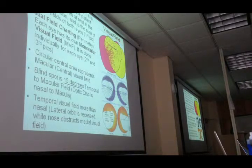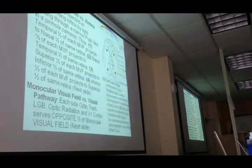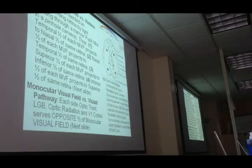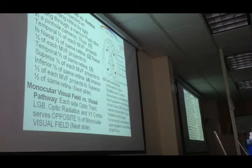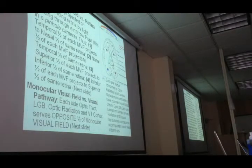Now let's see how the visual field is represented in each retina and continues through the optic tract, optic radiation, and so on. This is the right eye and this is the left eye — look at the color coding: orange and blue. Light rays from the left are crossing at the pupil and falling on the right half of each retina. Light rays from the blue portion on the right side are crossing at the pupil and falling on the left half of each retina. This is the pinhole effect.